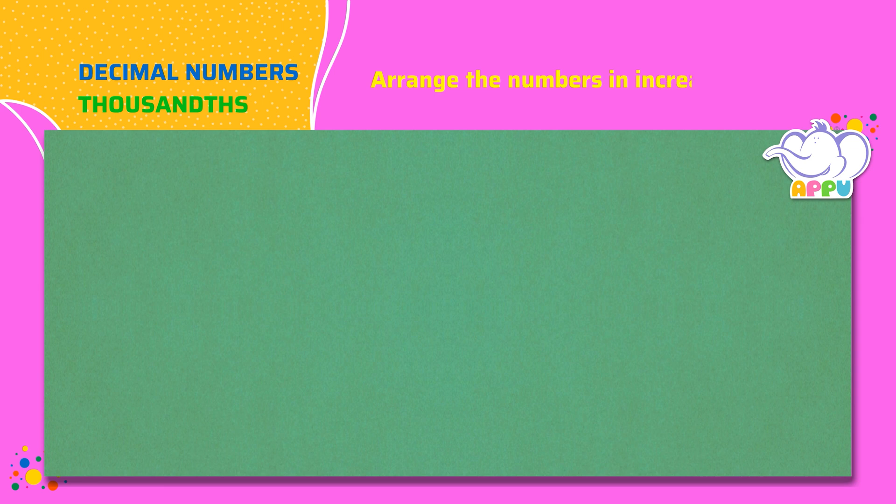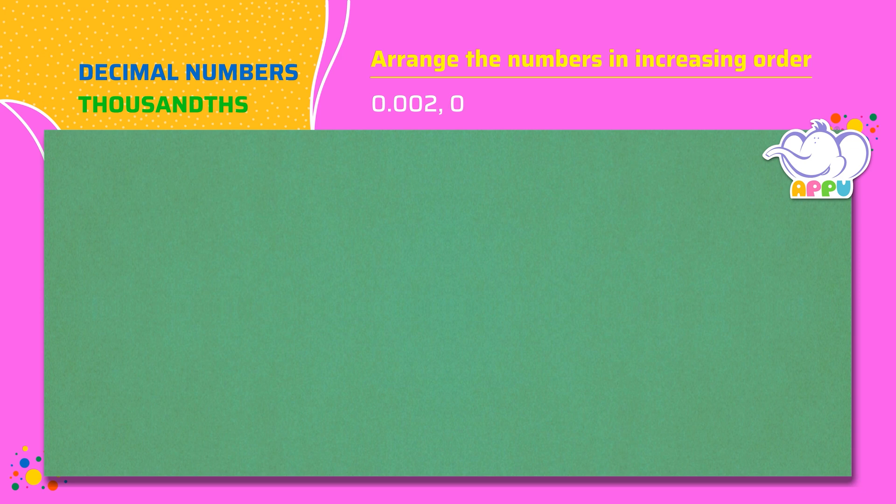Arrange the numbers in increasing order. 0.002, 0.004, 0.005, 0.001.